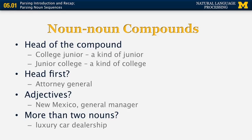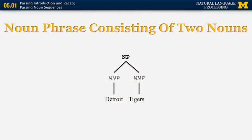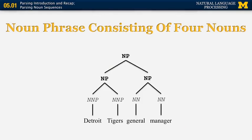Noun phrases consisting of nouns are not limited to two nouns. Consider 'luxury car dealership' — it could be a dealership for luxury cars, or a car dealership that is very luxurious. The interpretations connect to the structure of the phrase. 'Detroit Tigers' is clearly a noun phrase of two nouns, but 'Detroit Tigers general manager' consists of two noun phrases — 'Detroit Tigers' and 'general manager' — combined. With four consecutive nouns, we can have many other interpretations.